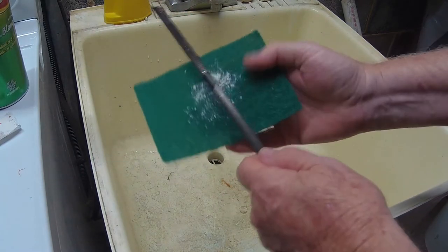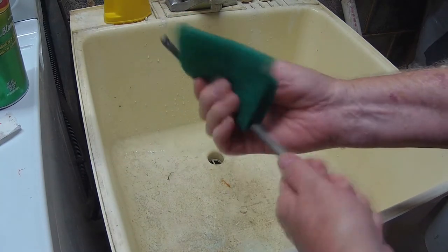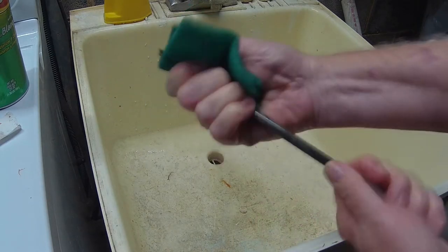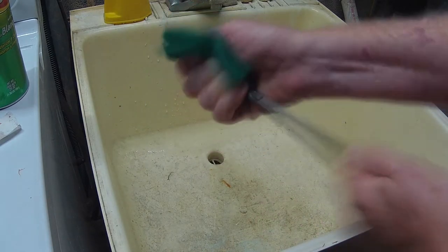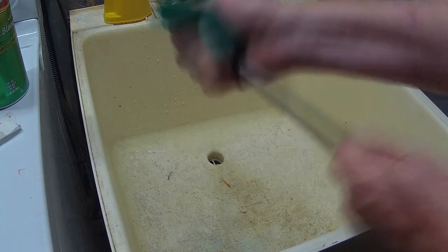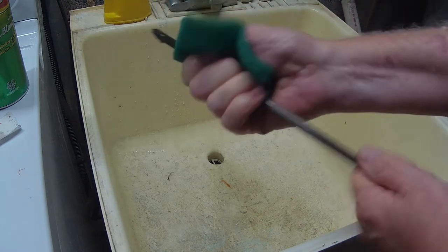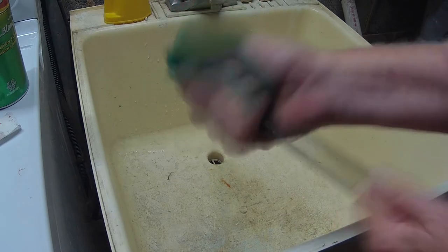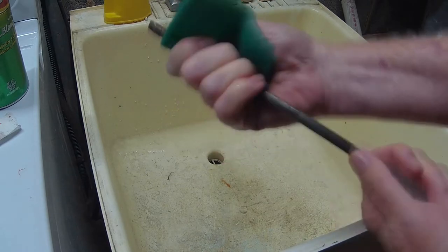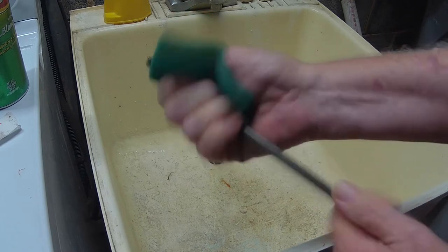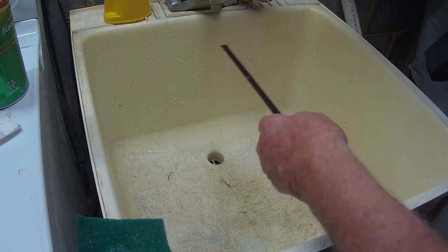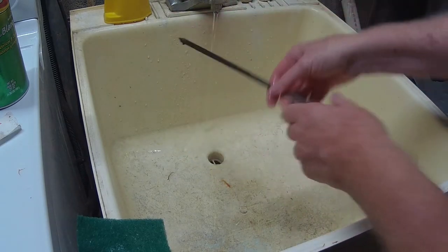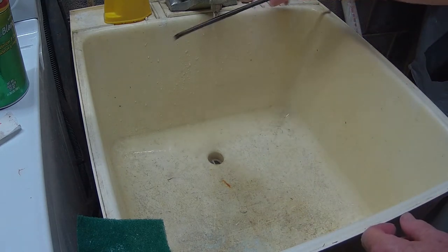Put some Comet on my pad again, use a turning motion around in a circle. Don't want to go back and forth because that will put grooves in it that way. This will give it grooves in a circle the way the shaft was made and the fletchings will stick better.